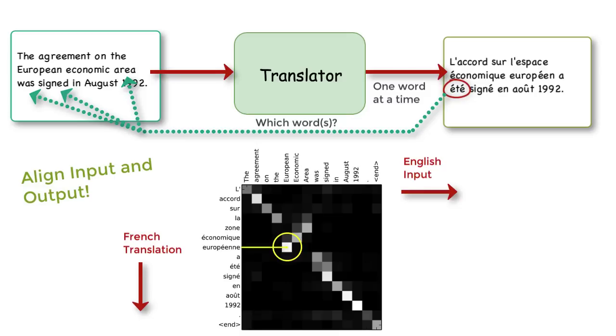While generating the French word européen, it looks like the only word it would consult is the English word European. The same goes for août.